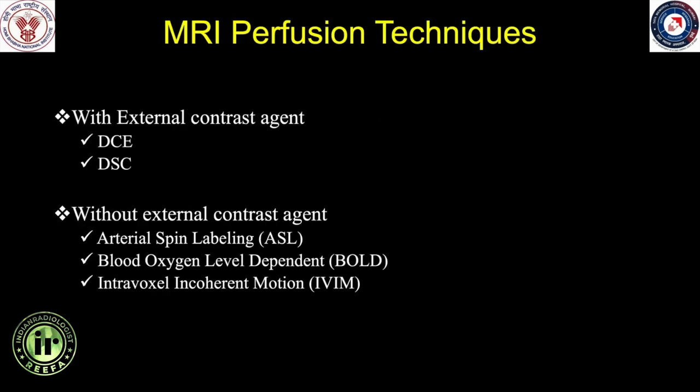There are multiple MRI perfusion techniques available these days. Perfusion imaging can be done with or without contrast agent. Techniques with contrast agents include dynamic contrast enhanced perfusion and dynamic susceptibility contrast perfusion. Without contrast agents: arterial spin labeling, blood oxygen level dependent imaging, and intravoxel incoherent motion.